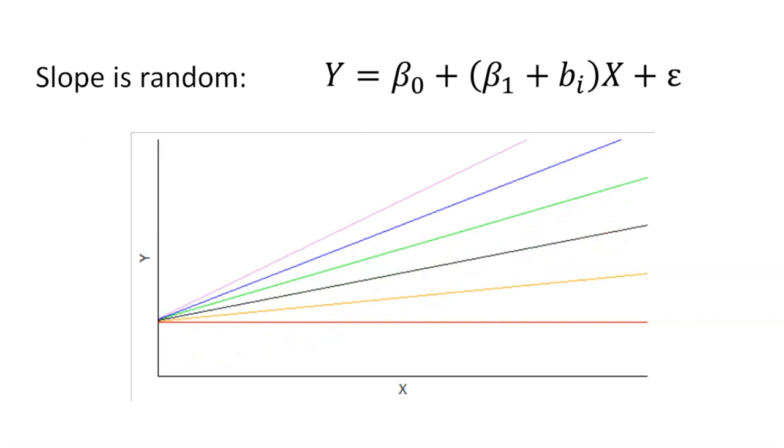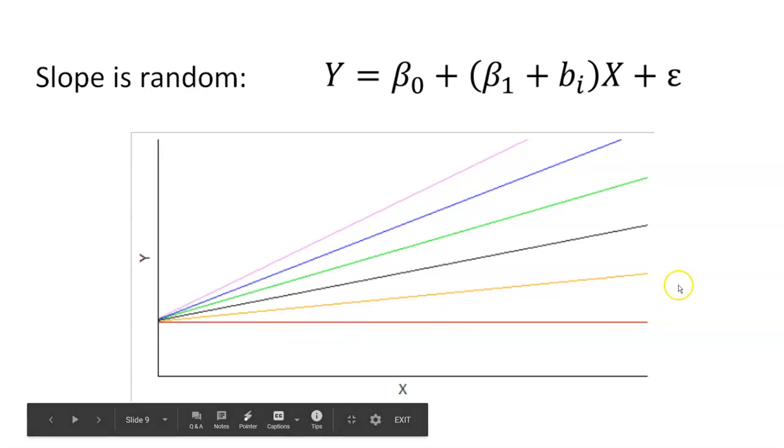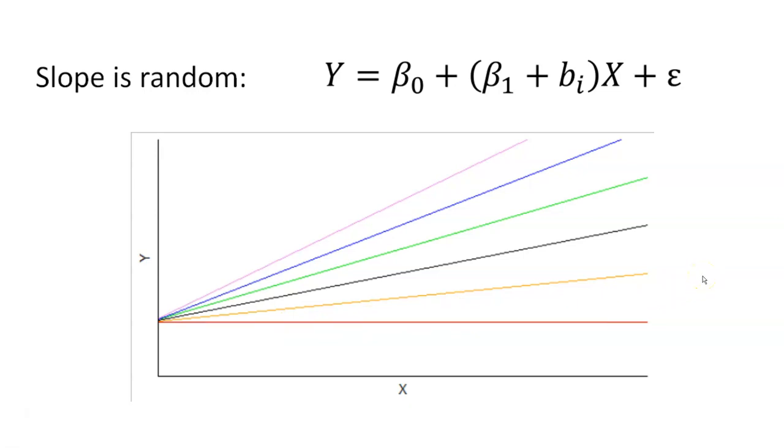Well we can set the slope to be the random effect if we want. How that would look like is we have our fixed effect for the intercept, our fixed effect for the slope, but we're going to add a random effect. We'll call that b sub i. And note that we can get different values of the slope if we allow the slope to be random. And so in this case, now we all share the same y-intercept, but it's the slopes that differ. You can see this pink line has a steeper slope than this red line which is nearly flat. And so we can set the slope to be random.